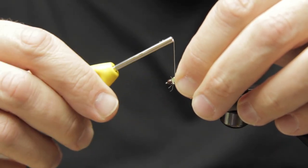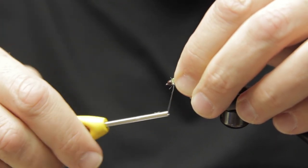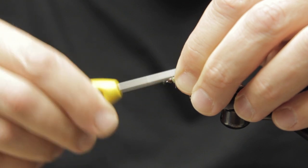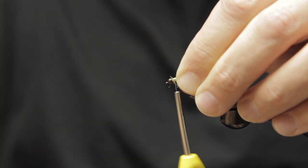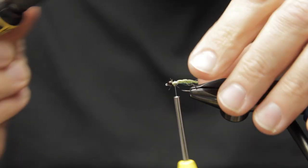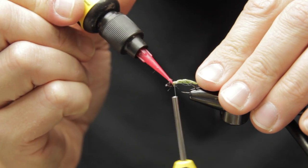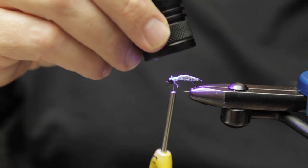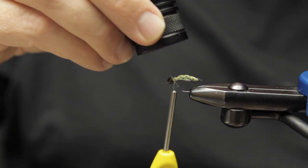And you can see you get this really cool caddis body. Try to get it to compress just a bit and lash that down thoroughly. I'll coat it with just a little bit of flow again, binding it all together. This is going to help create a more durable fly.